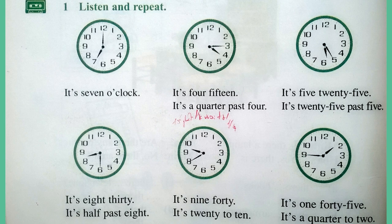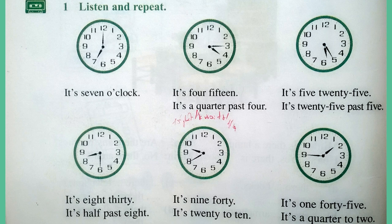It's 7 o'clock. It's 4.15 — it's a quarter past 4. It's 5.25 — it's 25 past 5. It's 8.30 — it's half past 8. It's 9.40 — it's 20 to 10. It's 1.45 — it's a quarter to 2.